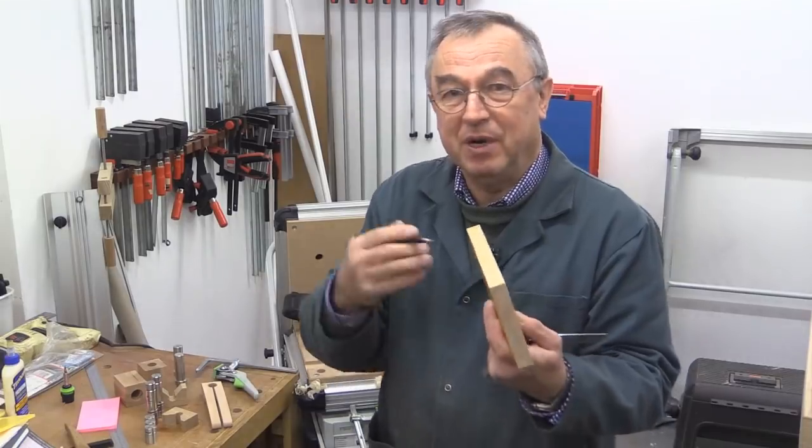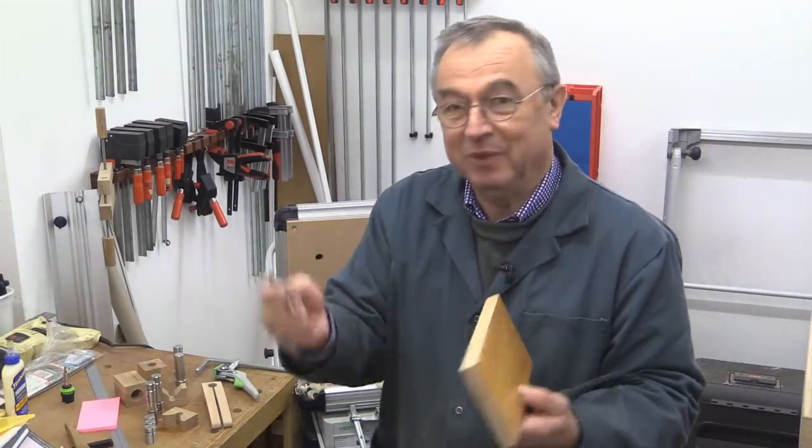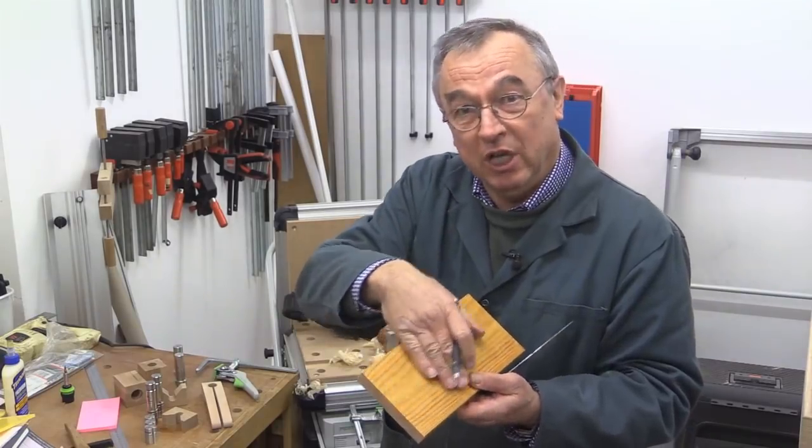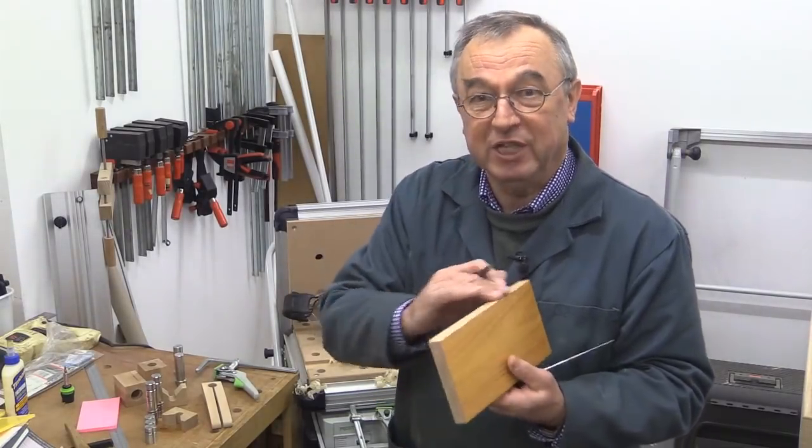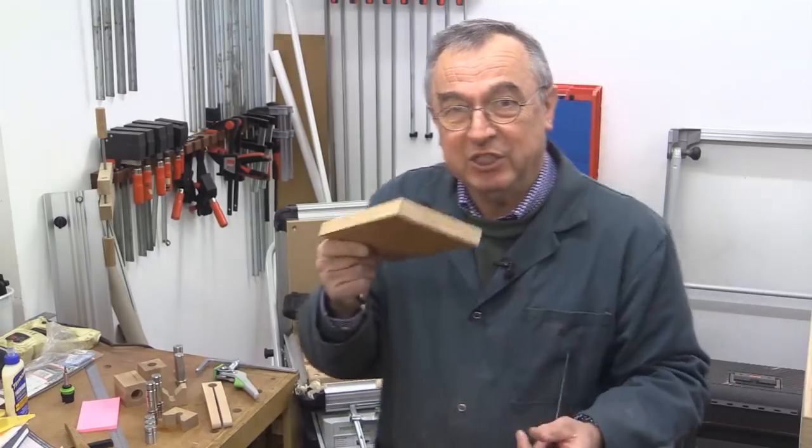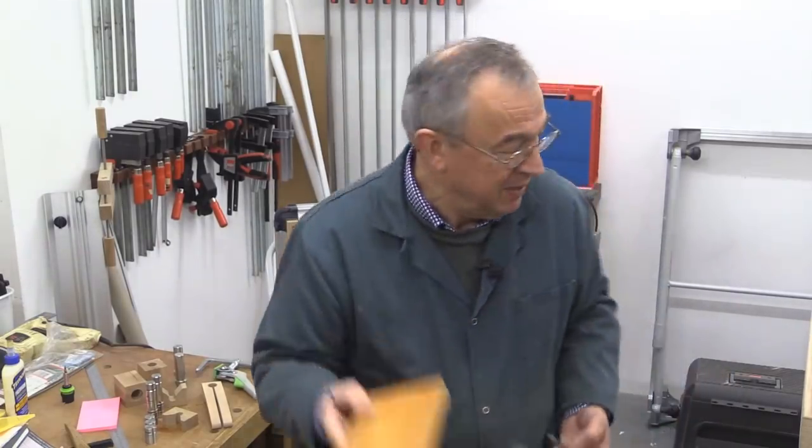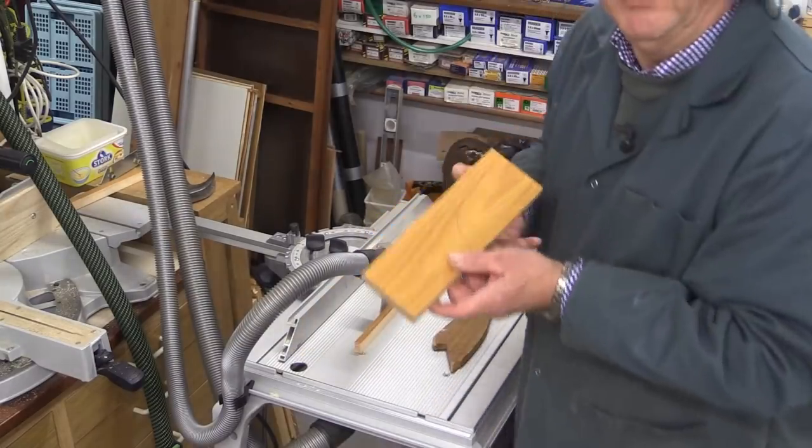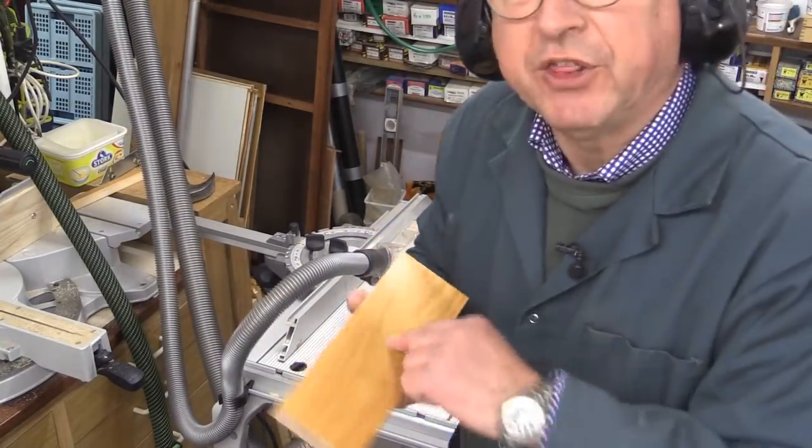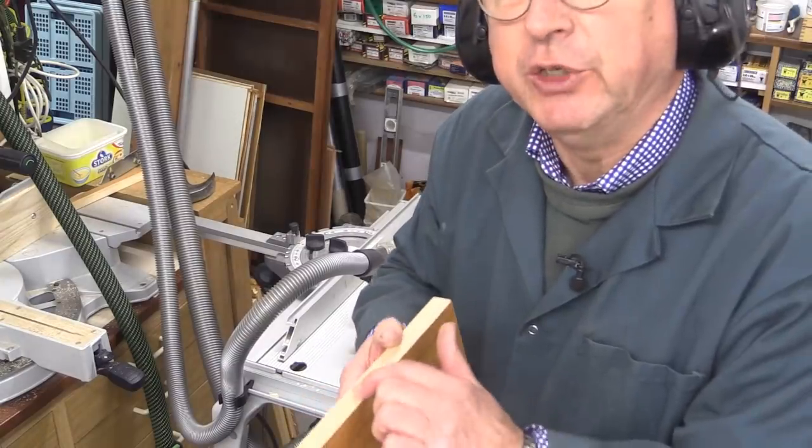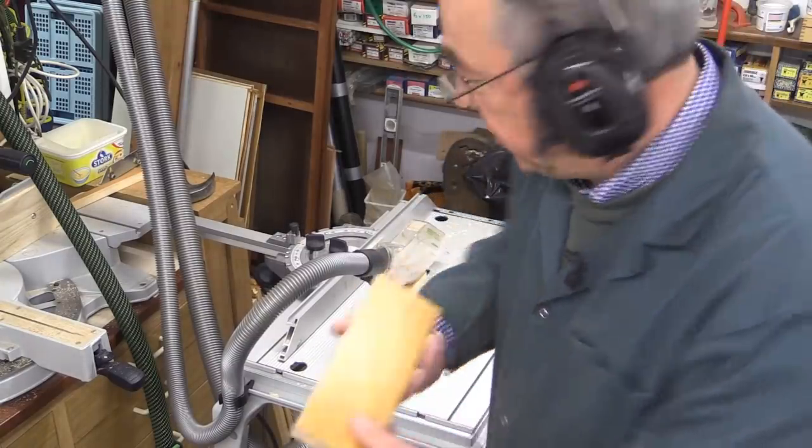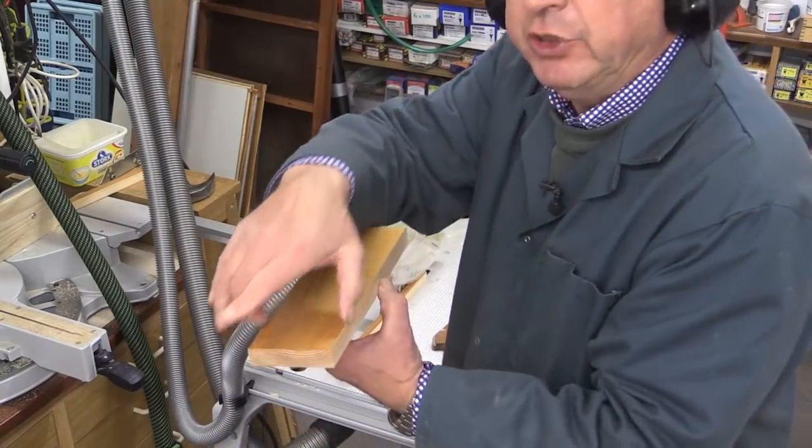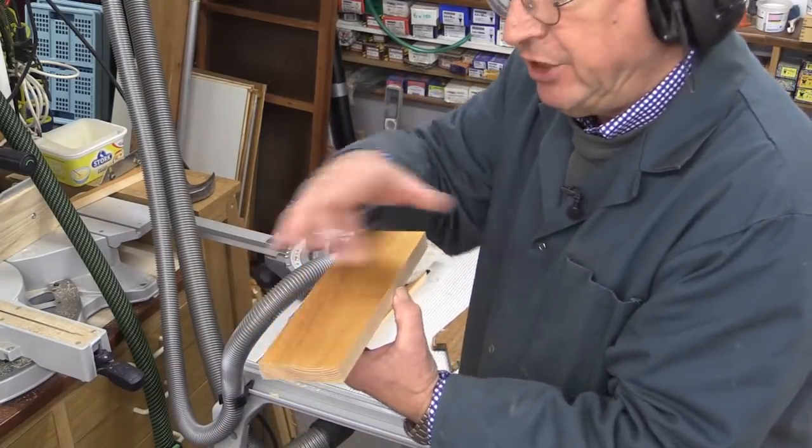So I'm going to mark that. And again, mark it with a squiggle, with whatever suits you. So now we've got a known good face, a known good edge. That means now we can take this piece of wood and we can cut it to width. And notice I used my face edge as the reference there. So now I'm guaranteed I've got two parallel edges.